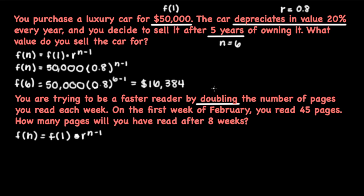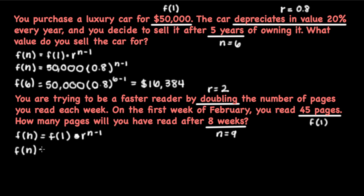On the first week of February we read 45 pages, so that's going to be our f(1). The question asks how many pages will you have read after eight weeks — that is going to be our n, and once again, after eight weeks, n is equal to nine. So let's rewrite our explicit formula with the values we know: 45 times 2 to the n minus 1. Solving for this will give you the number of pages you will have read after eight weeks.